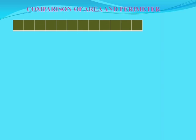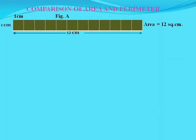Let's take another topic: comparison of area and perimeter. Here, 12 squares are joined together to make a rectangle, and each square is of side 1 cm. This is figure A. Its length is 12 cm, because 12 squares are joined together. So its area is 12 square cm, and the perimeter is 12 cm plus 12 cm plus 1 cm plus 1 cm, which becomes 26 cm.